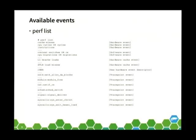Running 'perf list' produces a lot of output. Perf aggregates many different event sources into this event list: hardware events, software events, hardware cache events, raw events, and trace point events. Hardware events are exposed by the performance monitoring hardware. Software events are pseudo-events exposed by the kernel — for example, context switches. Raw events are a way of specifying a raw hex code to access low-level performance counter events. Trace point events expose the existing ftrace infrastructure into perf.